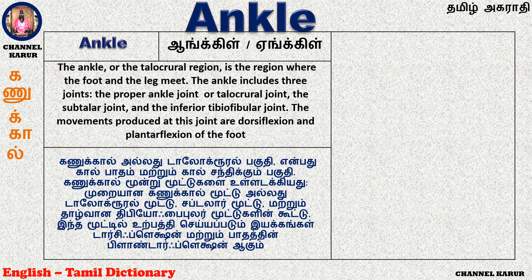The ankle, or the talocrural region, is the region where the foot and the leg meet. The ankle includes three joints: the proper ankle joint or talocrural joint, the subtalar joint, and the inferior tibiofibular joint. The movements produced at this joint are dorsiflexion and plantar flexion of the foot.